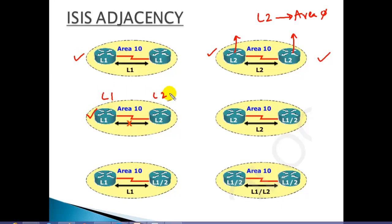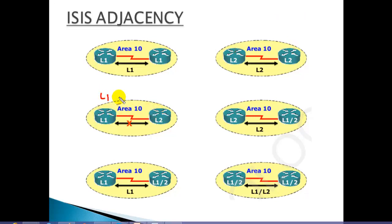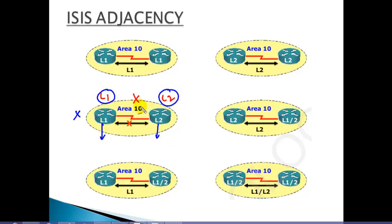However, if you configure one router as Level 1 and the other router as Level 2, they will not form the neighborship because there is a mismatch of levels. This is not going to work. Whenever you see a scenario where both routers are in the same area but are not forming neighborship, it is definitely a mismatch of levels.